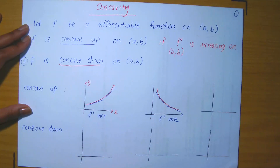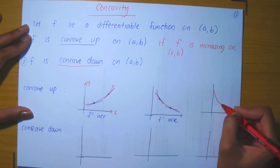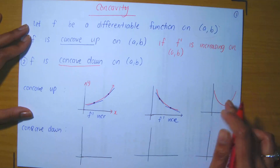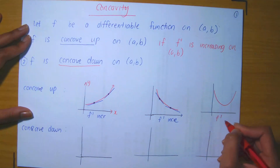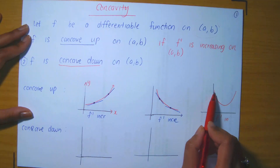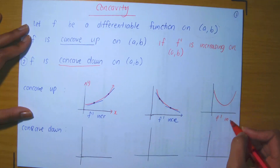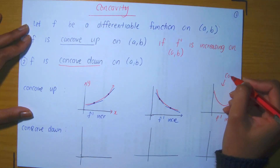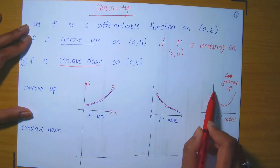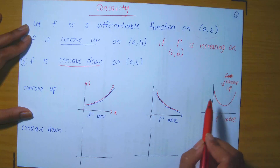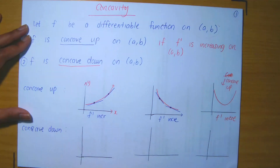In general, combining these two diagrams, if you have the following shape on a graph, then we say that this is concave up, because f' is increasing as I move from the left to the right. So this shape is concave up — it's kind of like a smiley face. When you have this smiley face shape, you've got a concave up shape.